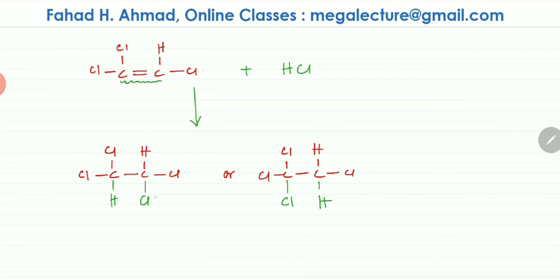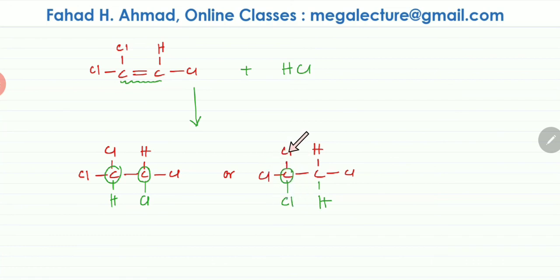Drawing both products, only the positions of H and Cl are swapped. Focusing on each carbon atom: in the first product, one carbon is bonded to 2 Cl atoms — so it is not chiral, as you need four different groups. The other carbon is also bonded to 2 Cl, so also not chiral. In the second product, one carbon is bonded to 3 Cl, and the other is bonded to 2 H — neither is chiral. So with HCl, no chiral product is possible.